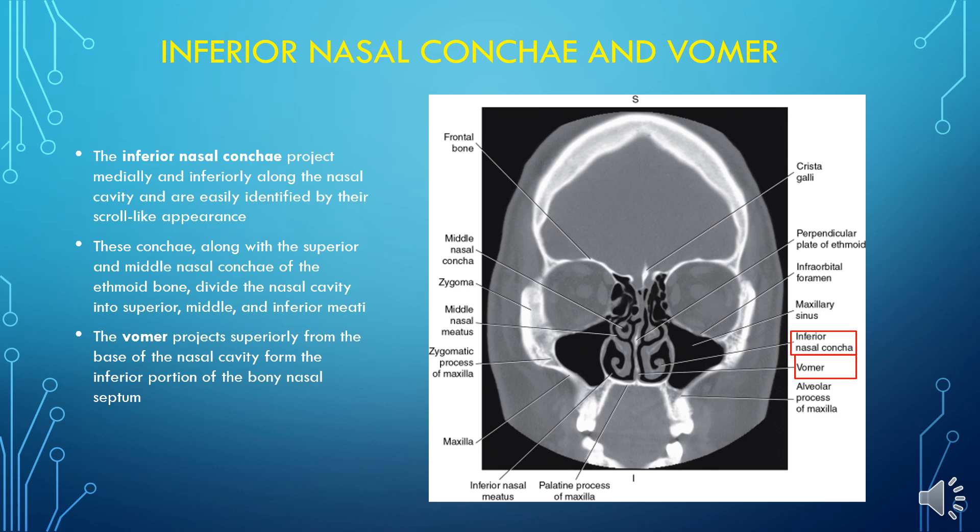The inferior nasal conchae project medially and inferiorly along the nasal cavity and are easily identified by their scroll-like appearance. These conchae, along with the superior and middle nasal conchae of the ethmoid bone, divide the nasal cavity into superior, middle, and inferior meatuses. The vomer projects superiorly from the base of the nasal cavity to form the inferior portion of the bony nasal septum.